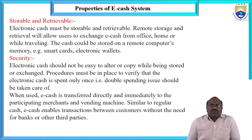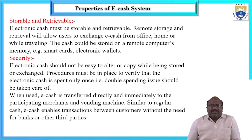The third property is called Storable and Retrievable — storing data from previous and present transactions. The electronic cash must be storable and retrievable. Retrieving the data from the data warehouse is called retrievable. Before that, storing of information is required. Remote storage and retrieval will allow users to access e-cash from the office, home, or while traveling. The cache should be stored in remote computer memory — for example, smart cards and electronic wallets.